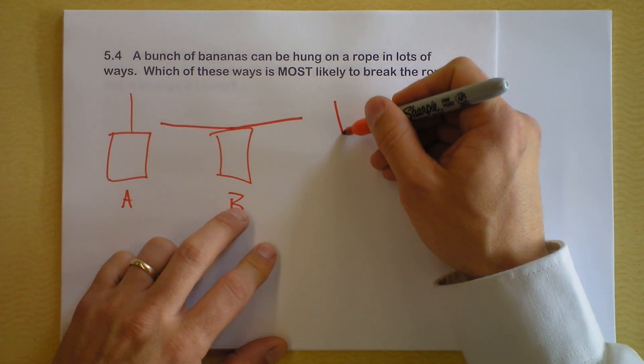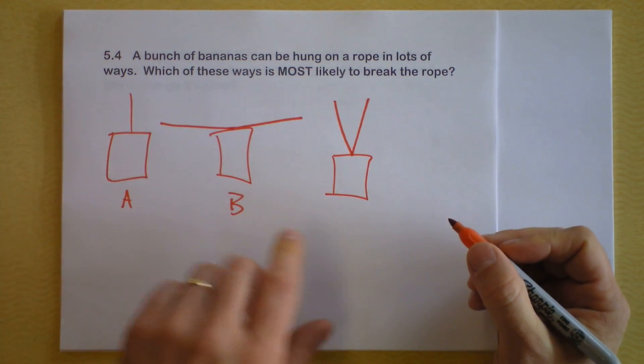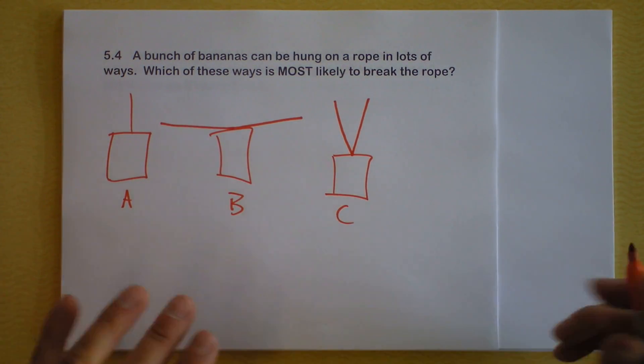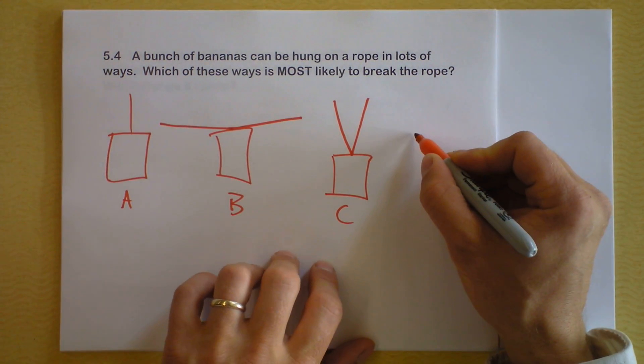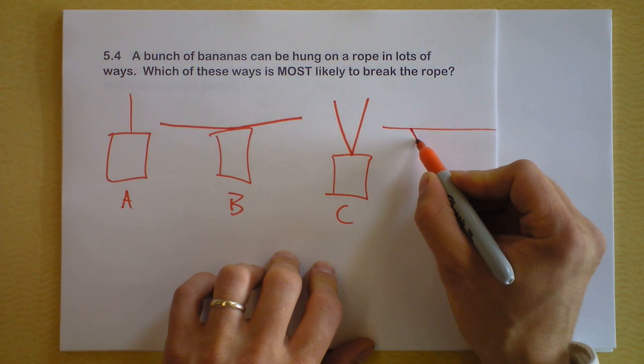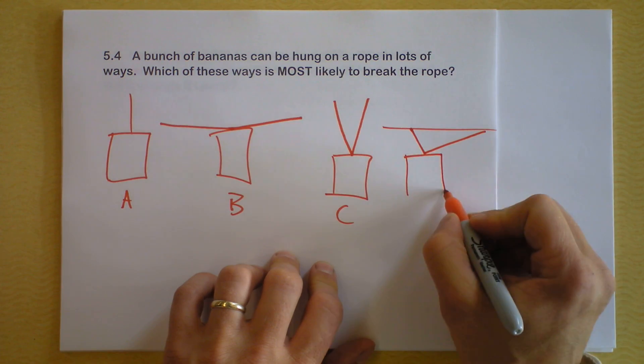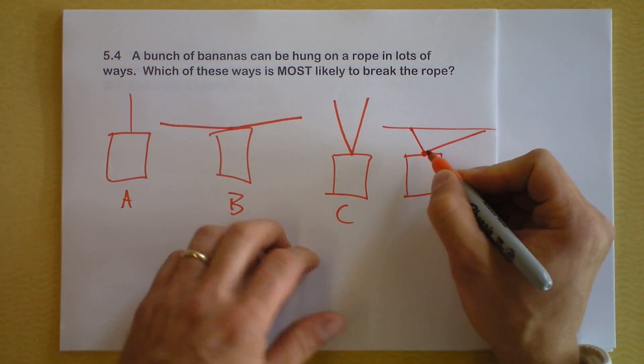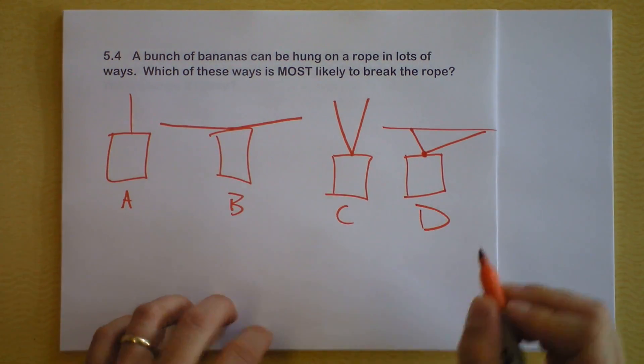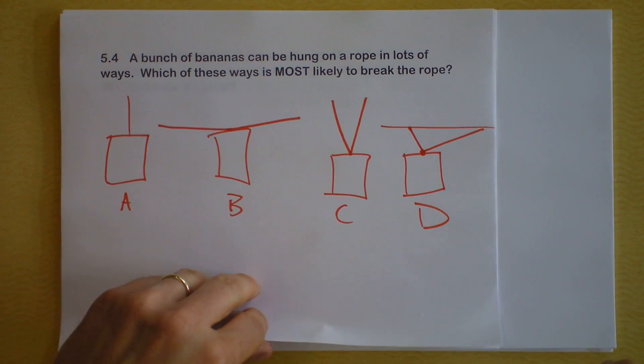Another option is you hang the bananas from ropes that look like that. Same bananas each time, we'll call that C. And a third option, let's say we do something a little bit crazy. There's the ceiling here again, and there's a rope that's looking like this, and another rope that's looking like that, and the bananas are hanging from that. We're tying the ropes together because otherwise the bananas would probably slide down into the middle. We can call that picture D. Which of those is most likely to break the rope?